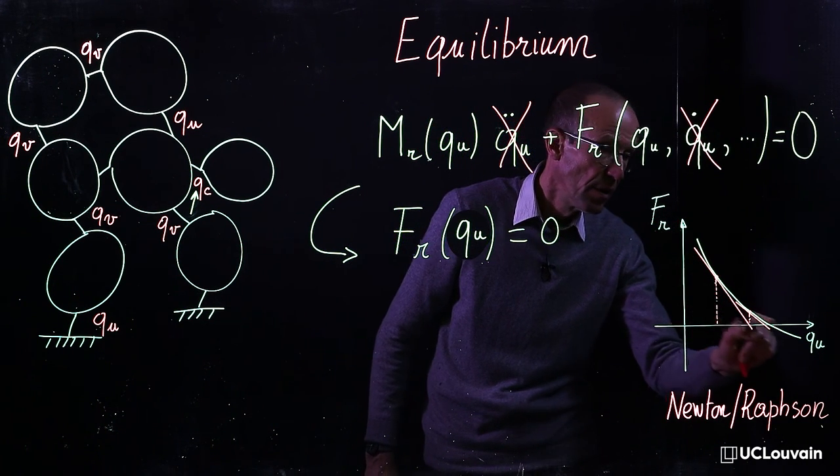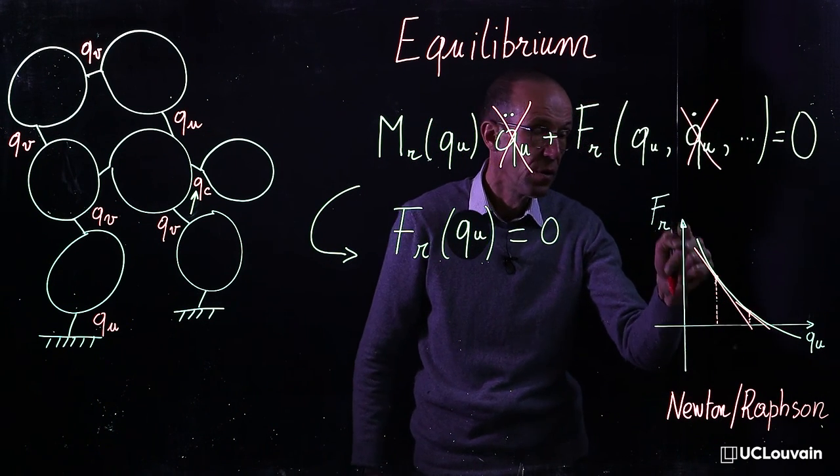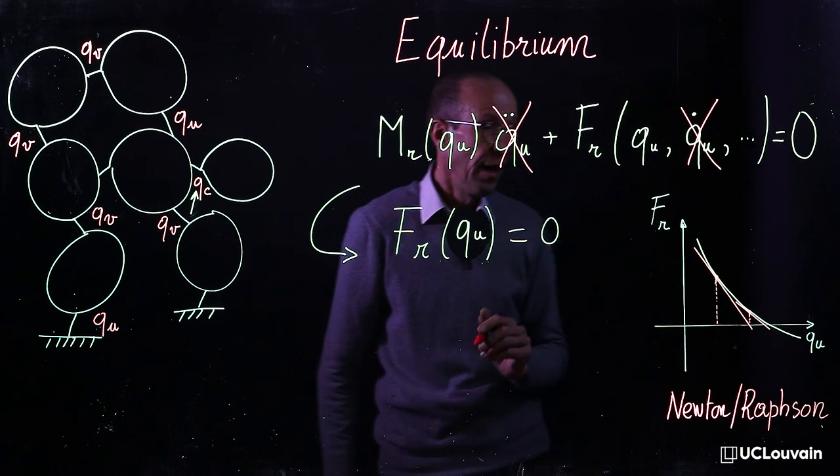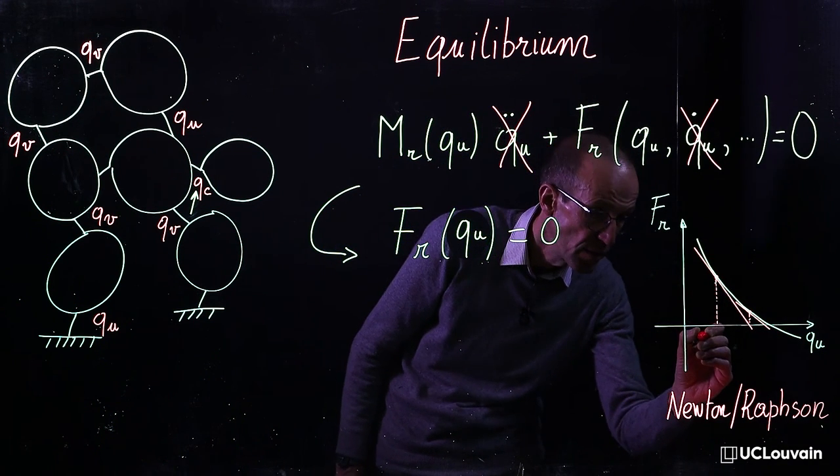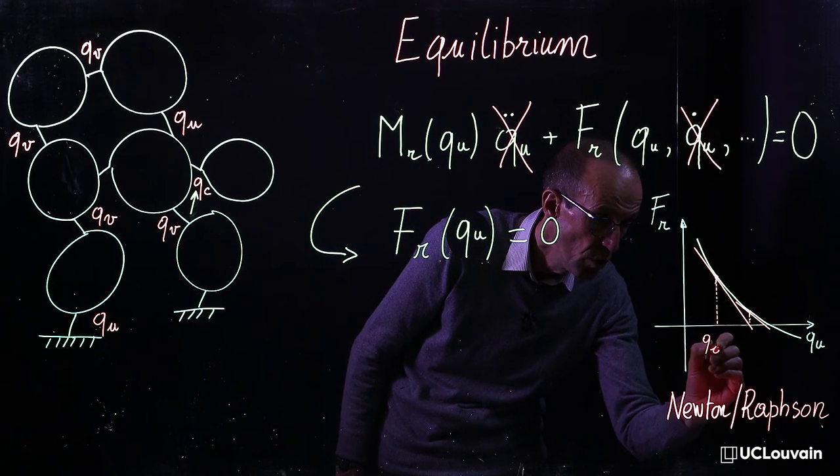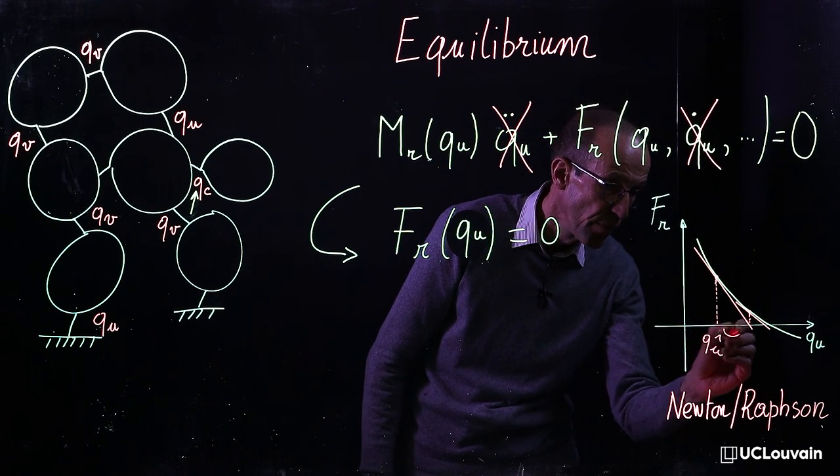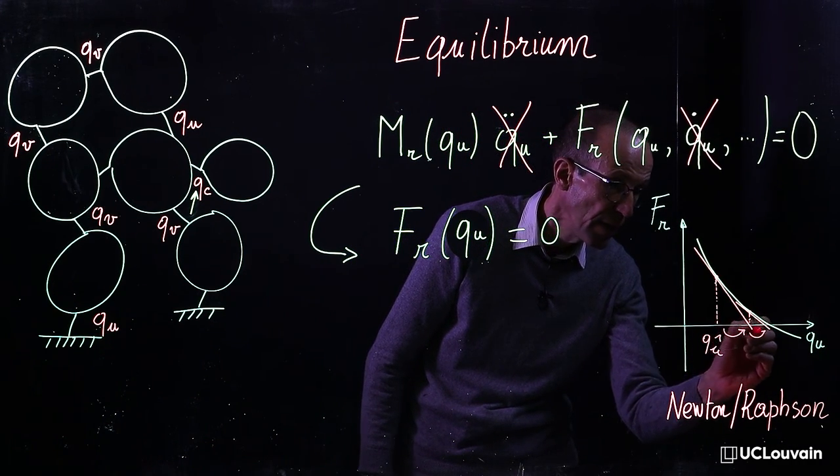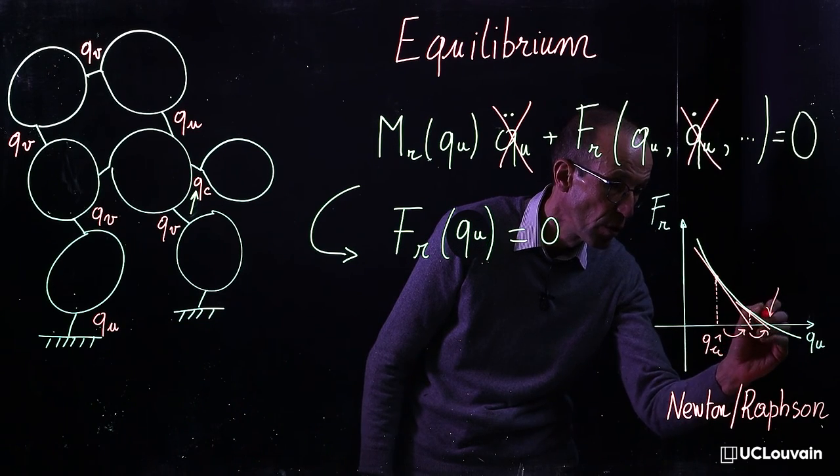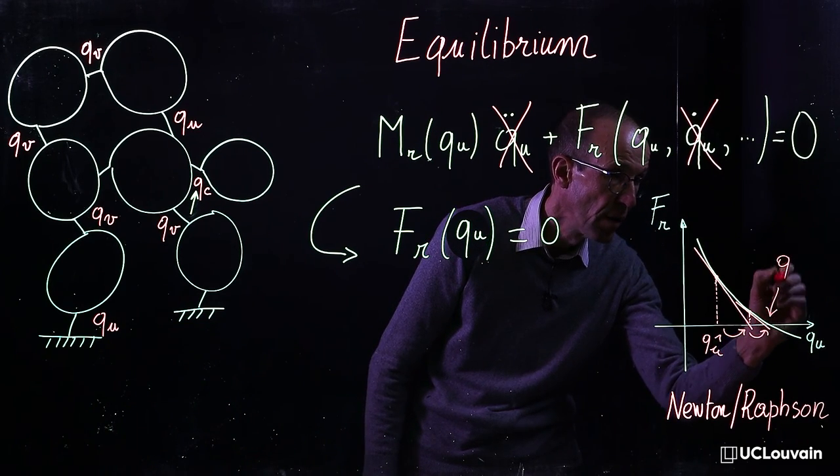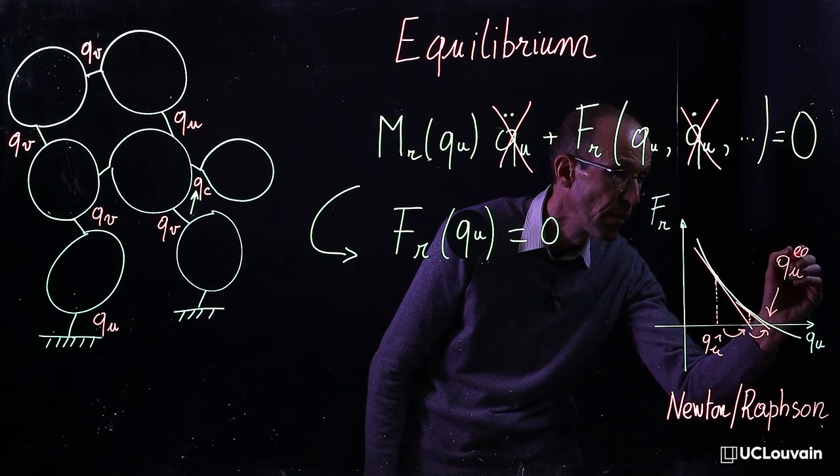Knowing your system model, the yellow curve, and starting from an initial guess, let's say q1, the Newton-Raphson algorithm is able to iteratively converge towards the final equilibrium solution.